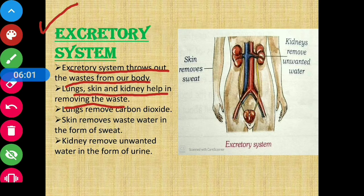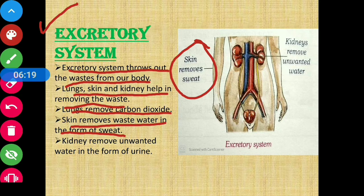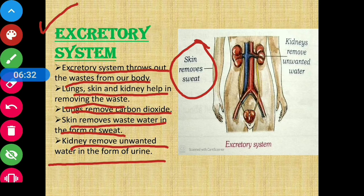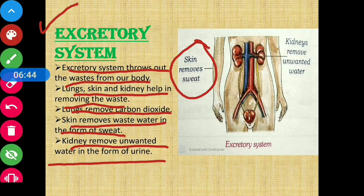Let's see how each organ removes waste. The lungs remove carbon dioxide. Similarly, the skin removes waste water in the form of sweat — you can see this in the picture. The kidney removes unwanted water in the form of urine. This is how they remove waste from our body, and that job is done by the excretory system.